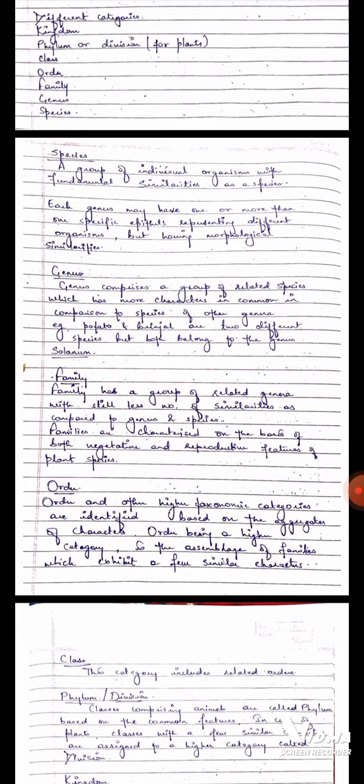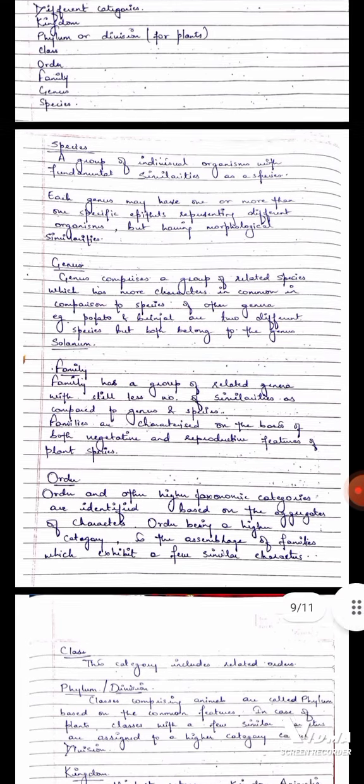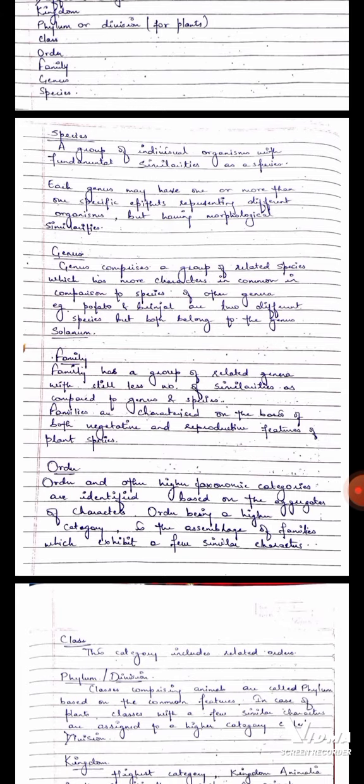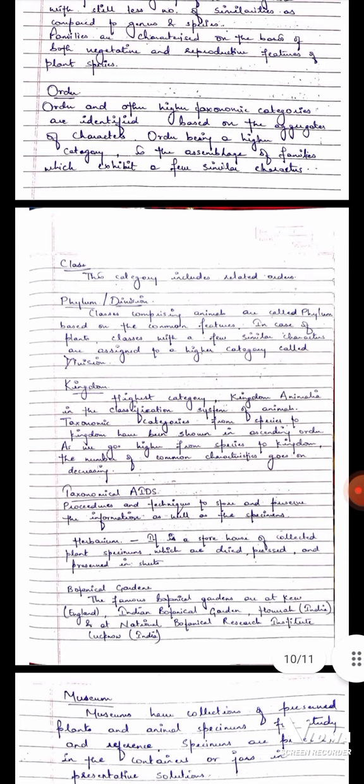Now we will talk about order. Order and other higher taxonomic categories are identified based on the aggregates of characters. Order being a higher category is the assemblage of families which exhibit a few similar characters. Now when we go upwards it comes to class. This category includes related orders.